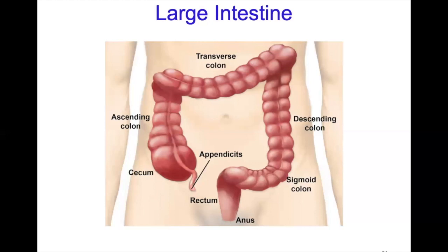The anus is the last part of the digestive tract — a two-inch-long canal consisting of pelvic floor muscles and two anal sphincters, one internal and one external. The lining of the upper anus detects whether contents are liquid, gas, or solid. The pelvic floor muscle creates an angle between the rectum and anus that prevents stool from coming out when it is not supposed to. The internal sphincter is always tight, helping to prevent involuntary defecation.